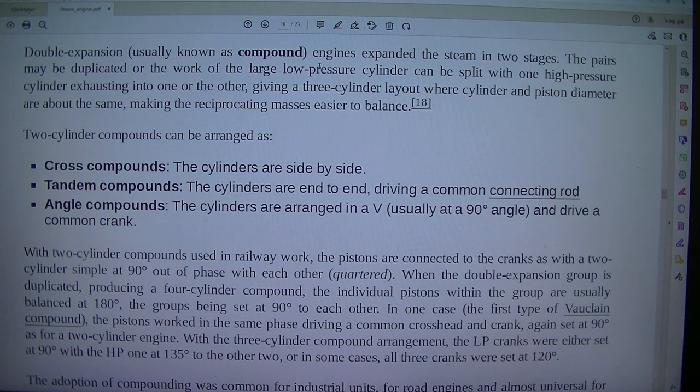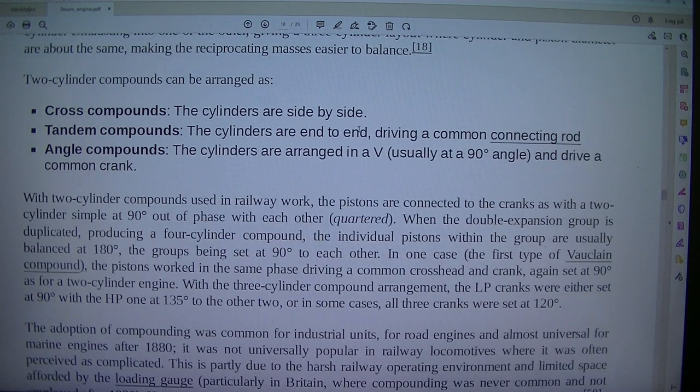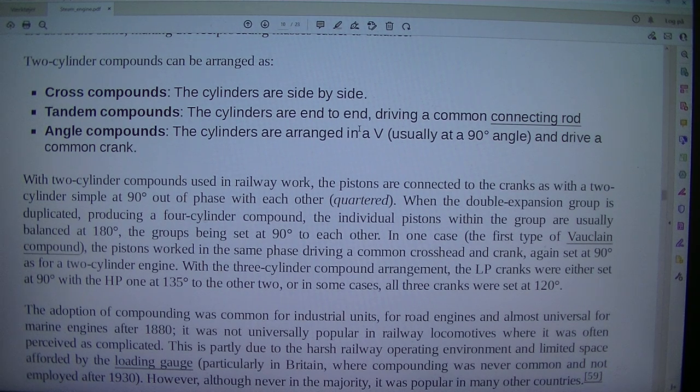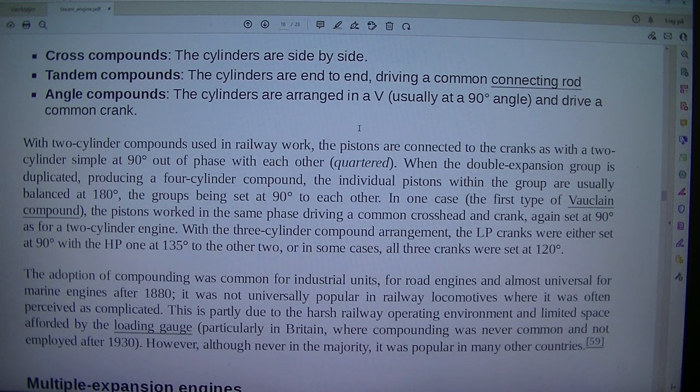Double expansion, usually known as compound, engines expanded the steam in two stages. The pairs may be duplicated or the work of the large low pressure cylinder can be split with one high pressure cylinder exhausting into one or the other, giving a three cylinder layout where cylinder and piston diameter are about the same, making the reciprocating masses easier to balance. Two cylinder compounds can be arranged as cross compounds, the cylinders are side by side. Tandem compounds, the cylinders are end to end, driving a common connecting rod. Angle compounds, the cylinders are arranged in a V, usually at a 90 degrees angle, and drive a common crank.